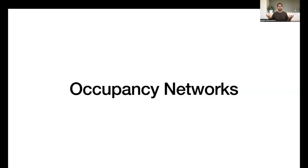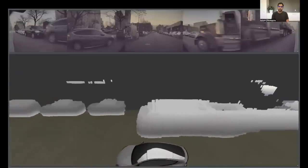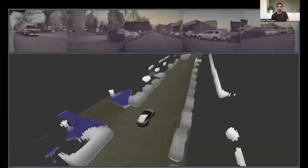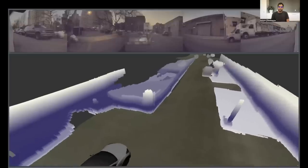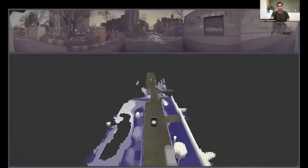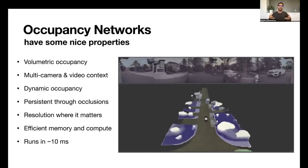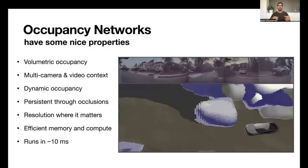Our solution to this problem is what we internally refer to as occupancy networks. Here's an example prediction from our occupancy network. I'll pause for a moment here for you to look at the predictions. These occupancy networks take in all the eight camera streams of input and produces a single volumetric occupancy around the car.